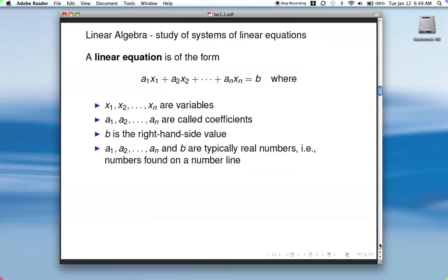Here all the a's and b are typically real numbers. And then you ask, what's a real number? Well, a real number is basically you can think of that as any number that you can find on a number line. So that includes integers, rational numbers, irrational numbers, negative numbers, positive numbers, zero, just about any number you can find on a number line is a real number. This is as opposed to complex or imaginary numbers.